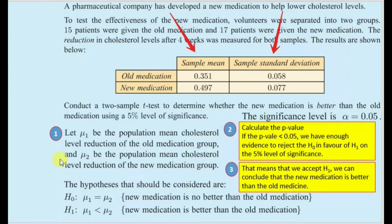I'll do this question in three different parts to make it easy. The first part is to decide what mu 1 and mu 2 are. Let mu 1 be the population mean cholesterol level reduction of the old medication group, and let mu 2 be the population mean cholesterol level reduction of the new medication group.